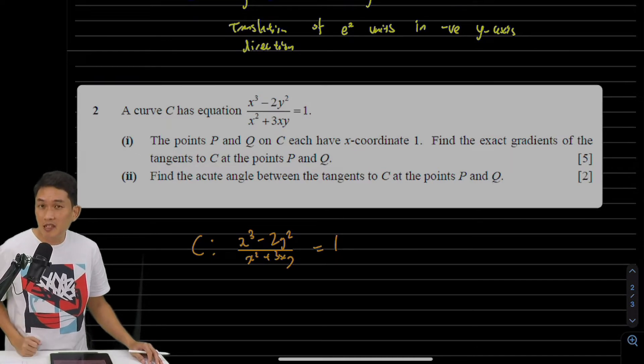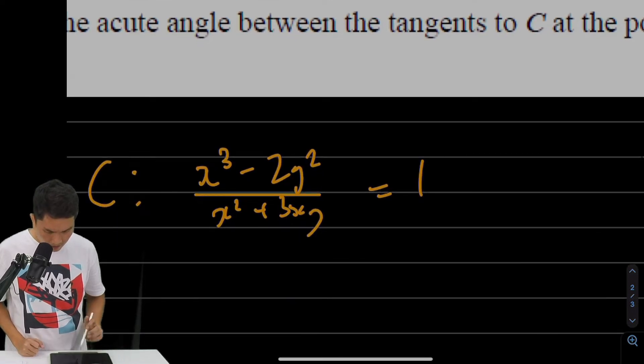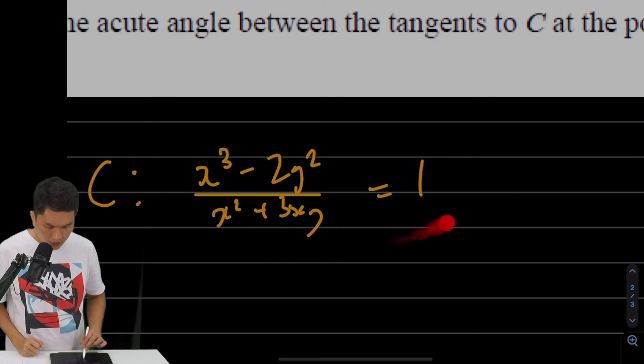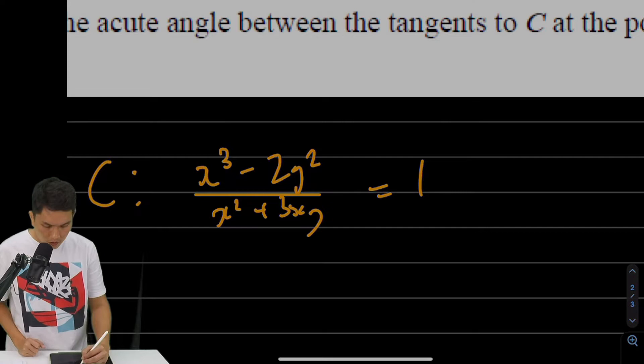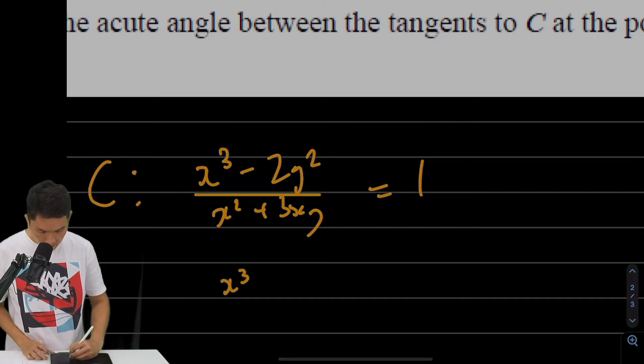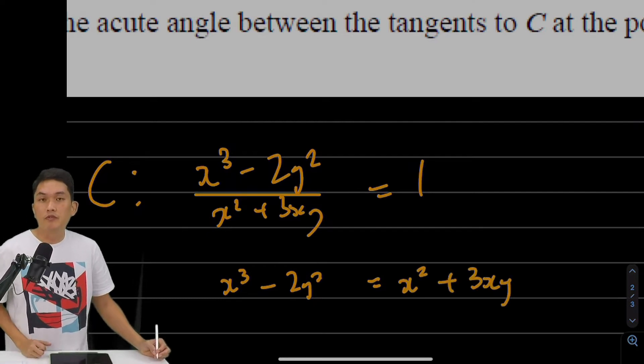So we're expecting differentiation. Looking at the form of the curve as given, I don't want to differentiate it directly because I'd have to use the quotient rule. Instead, we can re-express this by multiplying the denominator on both sides, which gives us something I'd prefer to differentiate.